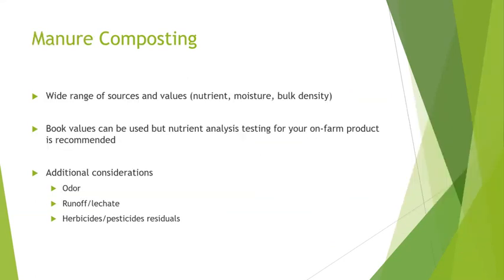Moving on to manure composting — there's a wide range of sources, including poultry litter, swine manure, and horse manure. Each has its own specific values, nutrient content, moisture content, and bulk density. You can find many of these in book values and lookup tables, but if you're a livestock farmer with access to a lot of manure product — whether you're going to use it raw or create compost — it's really recommended that you get it tested for your specific carbon percent, nitrogen percent, moisture percent, pH, and bulk density.